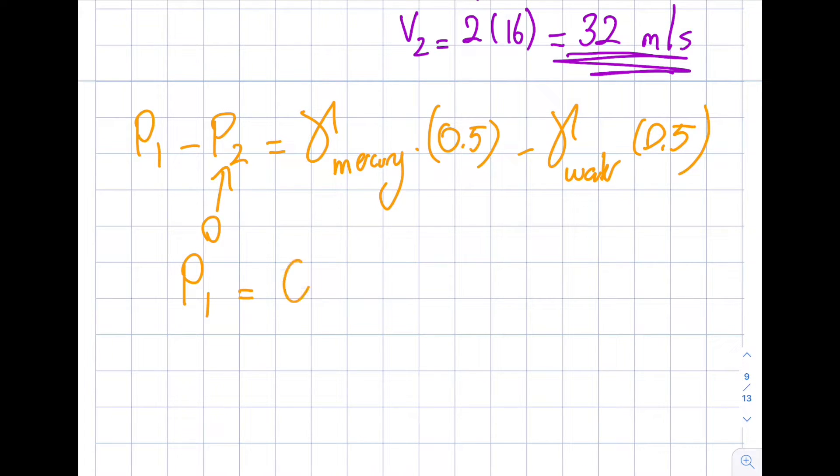So from here you can see I get myself P1 is equal to 0.5 times specific weight of the mercury, which is 133,000 that's given to me, minus 9,800. So let's look at this number. It's going to be 10,000 plus 200, right? So it's going to be 123,200.